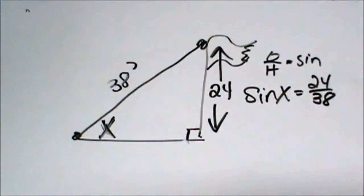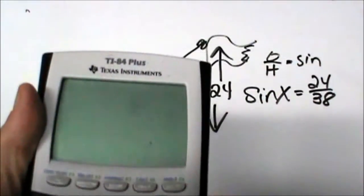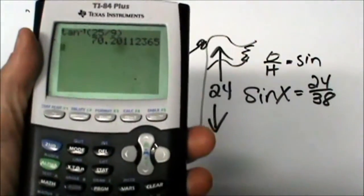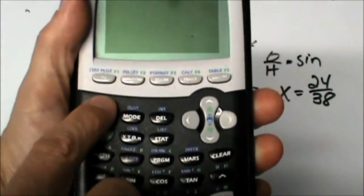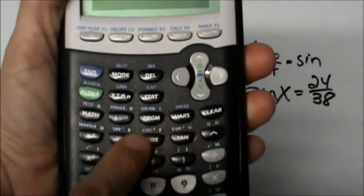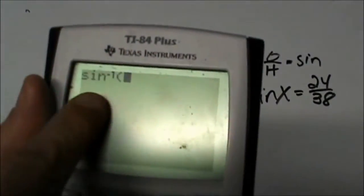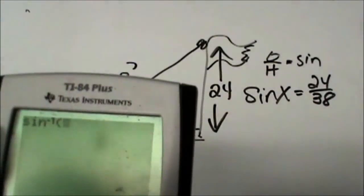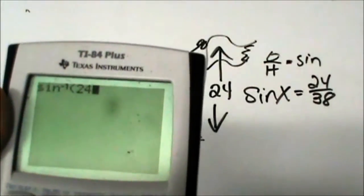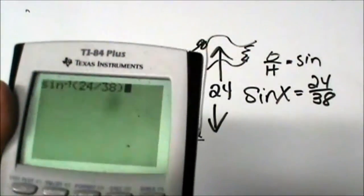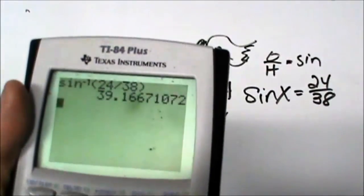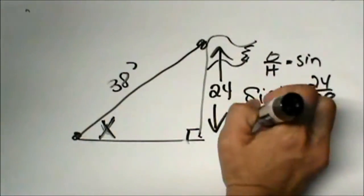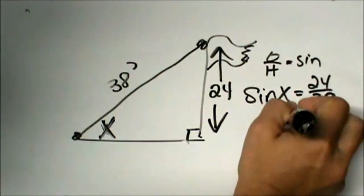Now grab your handy dandy calculator. How do we work backwards to angles? We are going to use our inverse button. So clear it out and let's take the second function and this time it is of sine. Get your inverse button and put in your ratio of 24 over 38 and let's see what our angle is. Our angle is 39.1 or just 39 degrees. So x is 39 degrees.